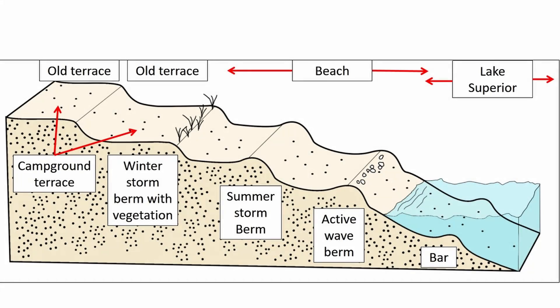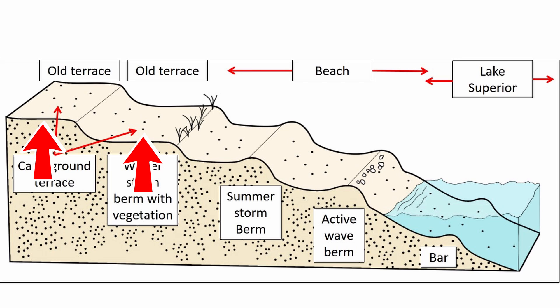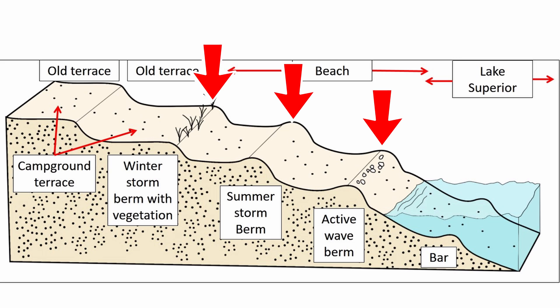To help us identify some subtle geological features developed on the Agawa Bay Beach, I will use this very simple cartoon as a road map to illustrate the beach features. As you walk away from Lake Superior towards the land you will cross a zone of active wave wash, a zone where summer storms modify the beach, the zone where winter storms modify the beach, and two old terraces where the present day campsites are located. Low mounds or hills of sand called berms separate some of these beach features.